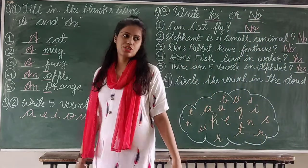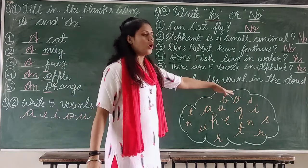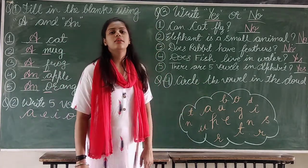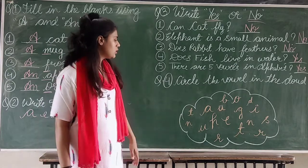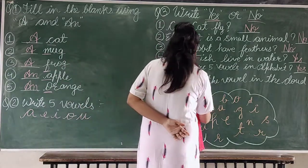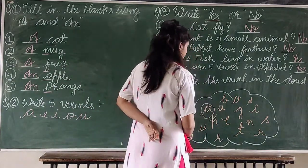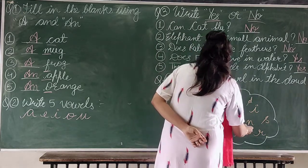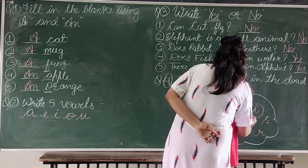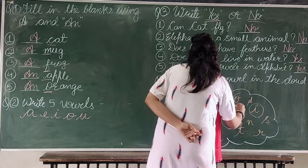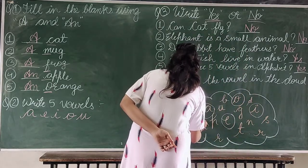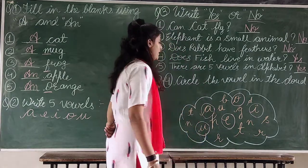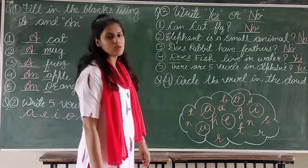Now question number four is: circle the vowels in the cloud. So you have to circle the vowels in the cloud. The vowels are A, E, I, O, and U — these are the five vowels. So you have to circle these vowels.